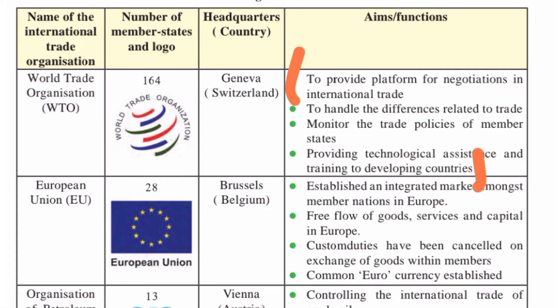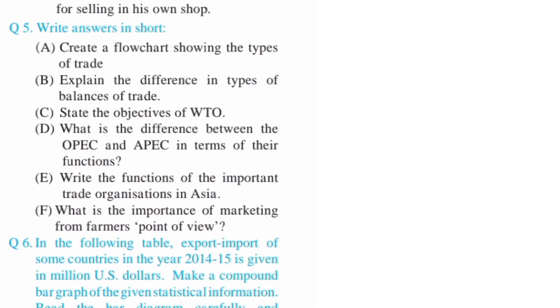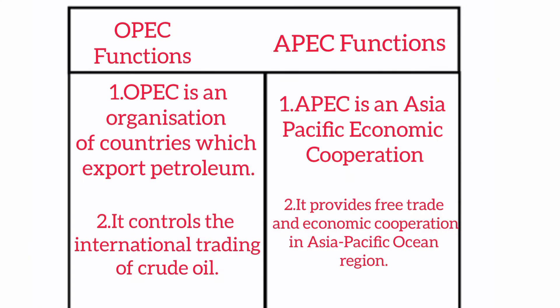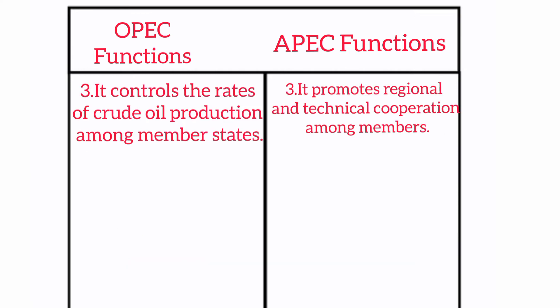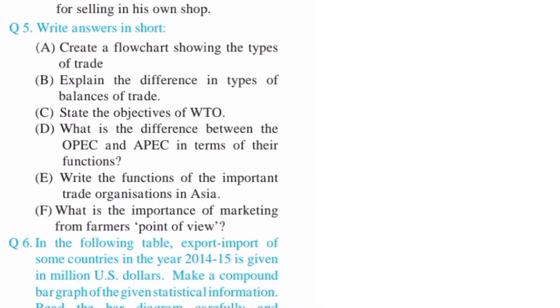Question five continued: State the objectives of WTO — refer to page number 70. OPEC functions: OPEC is an organization of countries which export petroleum. It controls the international trade of crude oil and controls the rate of crude oil production among member states. APEC functions: APEC is the Asia-Pacific Economic Cooperation. It provides free trade and economic cooperation in the Asia-Pacific region and promotes regional and technical cooperation among members.